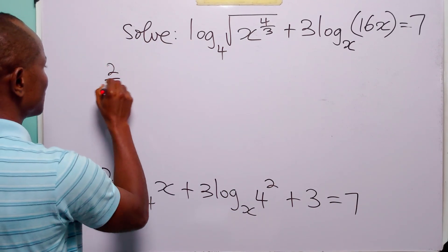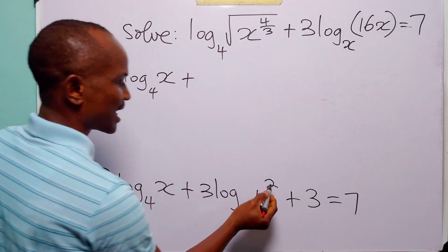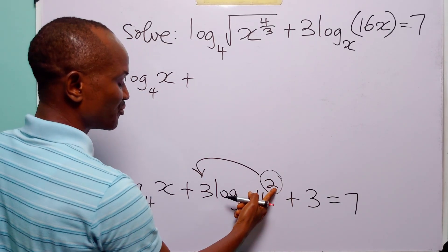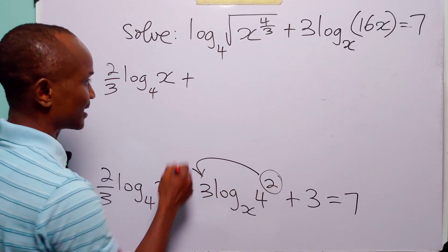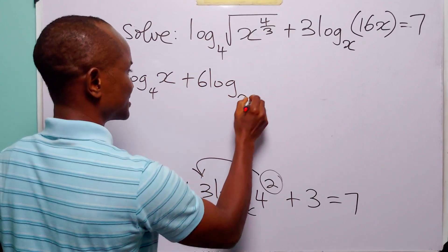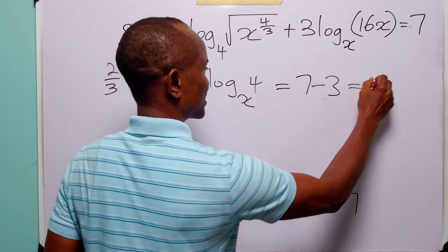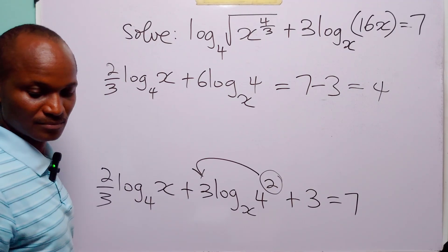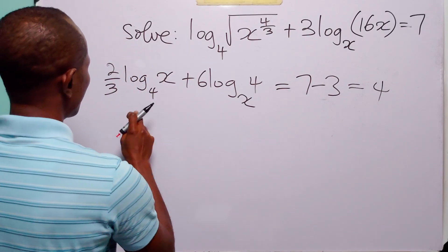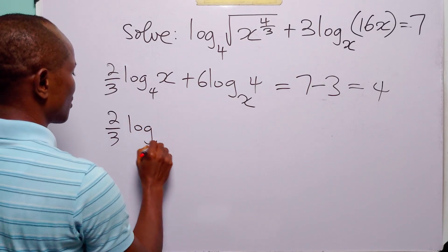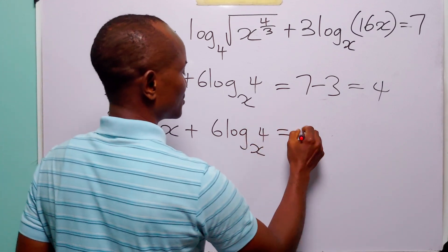So we have 2 over 3 times log to base 4 of x, plus — once more, let us apply the power rule — let us write 16 as 4 squared. When we do that, we bring 2 down to the front, and of course we already have 3 here. So this is now going to be 2 times 3, which is 6 times log to base x of 4. We take this over to the right-hand side, so this is equal to 7 minus 3, which is equal to 4. The equation is now 2 over 3 times log to base 4 of x plus 6 times log to base x of 4 is equal to 4.